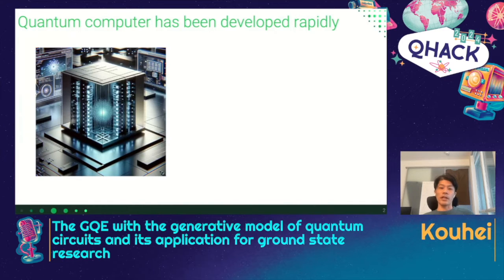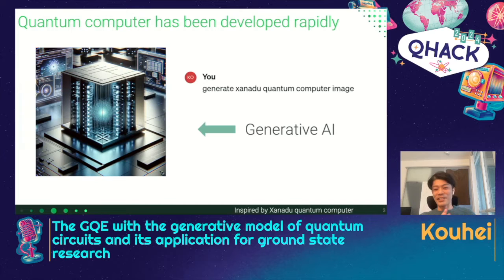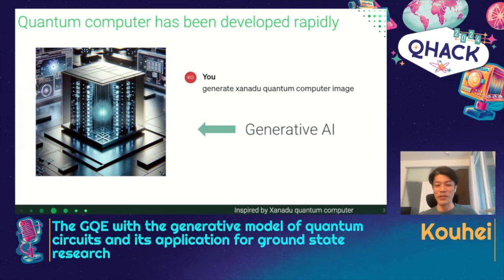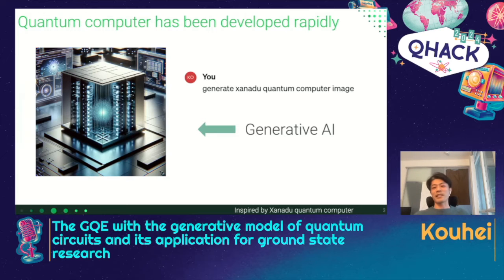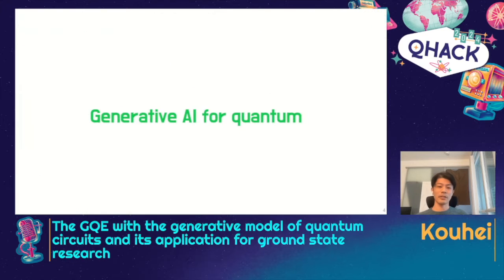Quantum computers have been developed rapidly. This is a beautiful image of a quantum computer generated by generative AI. So generative AI is also improving. This slide represents what I want to talk about today: quantum computers have been developed rapidly and generative AI is also improving rapidly. So why don't we combine those two? Generative AI for quantum — this is the main topic of today's talk.